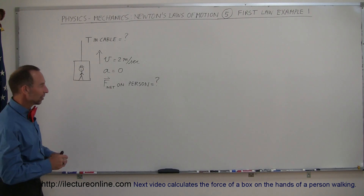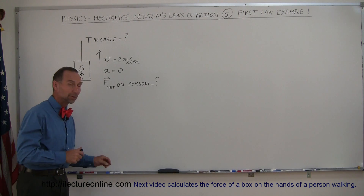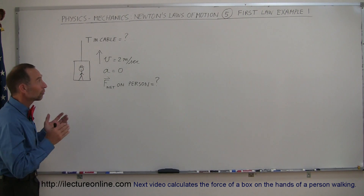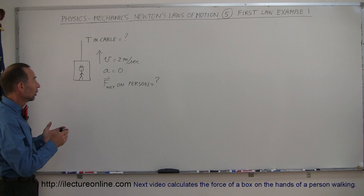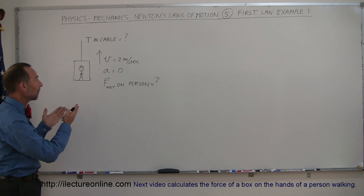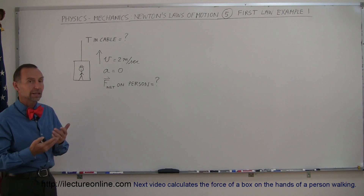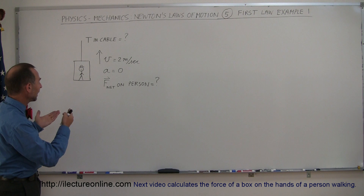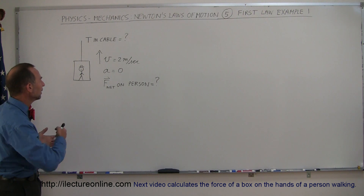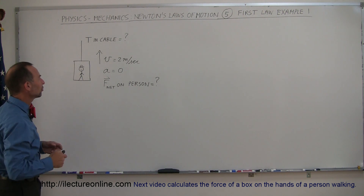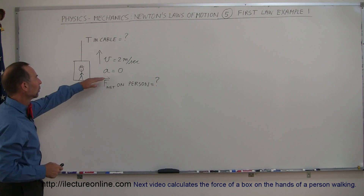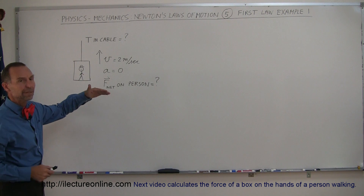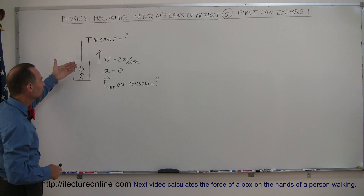Welcome to our lecture online. Here's an example where we're going to use Newton's first law to try and understand what happens in an example like this, where a person is riding in an elevator currently going up at 2 meters per second, with an acceleration equal to zero, meaning at constant speed.